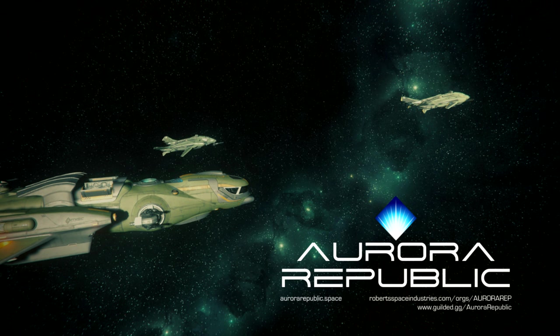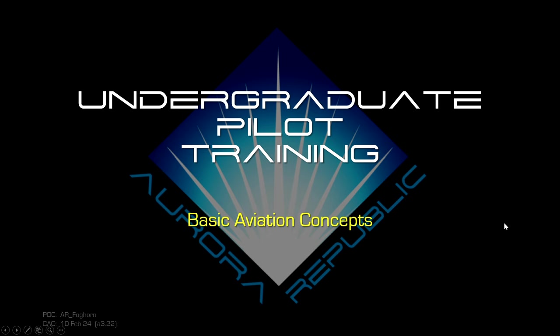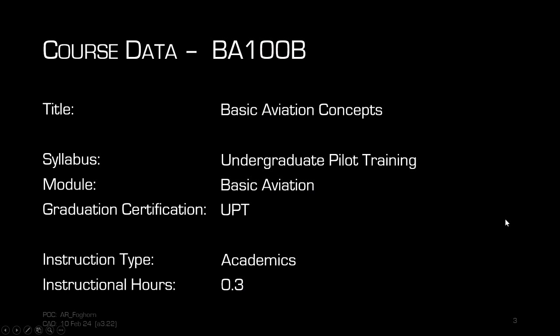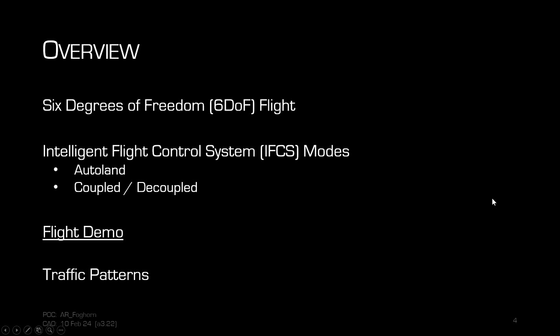Tonight we are going over basic aviation concepts — Basic Aviation 100 Bravo, basic aviation concepts — part of the undergraduate pilot training syllabus, basic aviation module to get your UPT certification. We've done this before, but it's the new year, so time to go through our standard training regimen starting from the beginning. Tonight we're going to talk about the six degrees of freedom, the Intelligent Flight Control System, IFCS modes, a quick flight demo, and touch a little bit on traffic patterns.